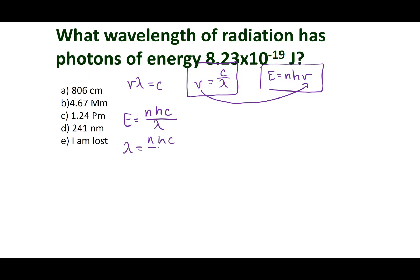I'm going to rearrange my equation because I'm interested in the wavelength of light. Lambda equals nhc over E. Let's put in our values. I told you I just want one photon of light, so n is 1. I'm going to put in Planck's constant, 6.626 times 10 to the negative 34th joules per second. I'm going to put the speed of light in, 3 times 10 to the 8th meters per second. Then I'm going to divide it by the energy, 8.23 times 10 to the negative 19th joules.